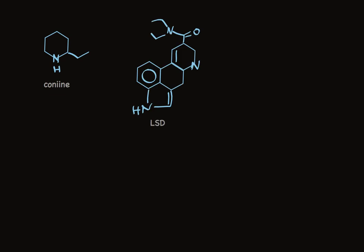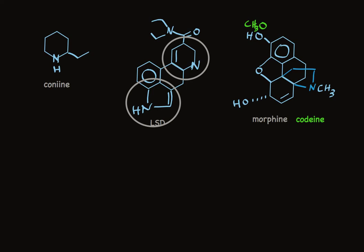LSD is a complicated compound that has two heterocyclic rings. There's a five-membered ring and a six-membered ring. Morphine and codeine also have two heterocyclic rings. One is a nitrogen ring and the other is an oxygen ring. There's the nitrogen heterocycle. It's a six-membered ring. And here's the oxygen heterocycle. These guys are important tools in pain management.